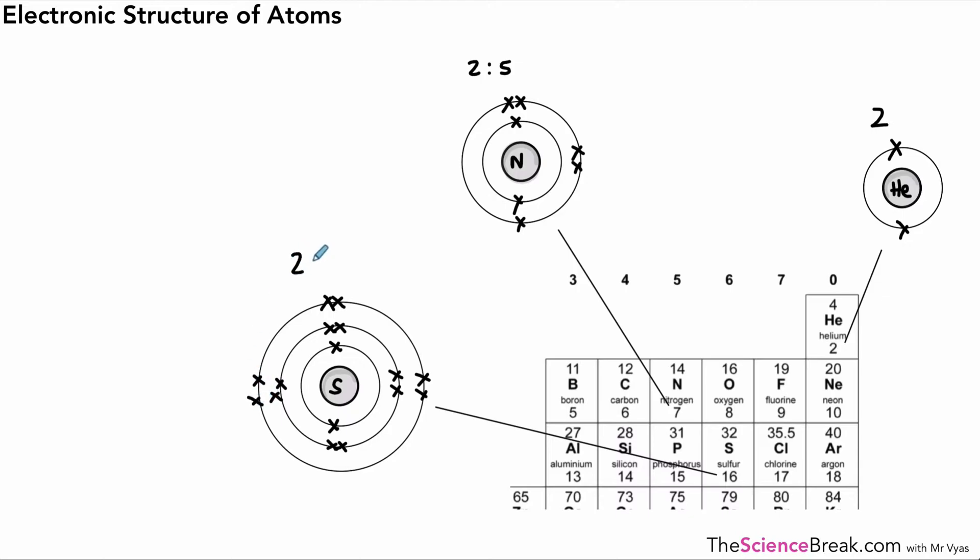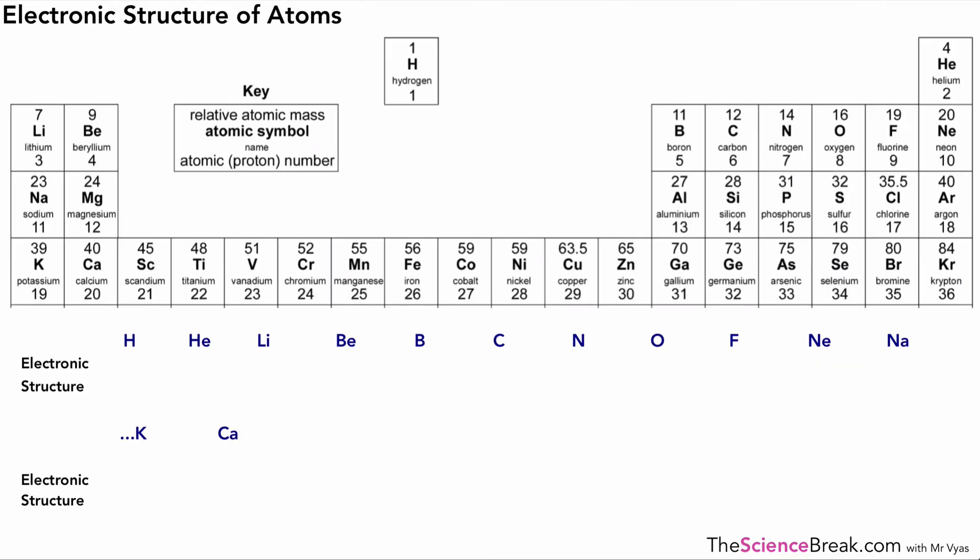We can practice that for a few more. What you should be able to do is do the electronic structure, either in a diagram or in written form, for the first 20 elements. By the first 20, we mean by looking at the proton number. So we've got hydrogen with 1, helium with 2, 3 and 4 for lithium and beryllium, and so on all the way up to calcium which is 20. So you should be able to do the electronic structures for all of those. You can pause here and have a go at writing those down and check your answers in a moment.